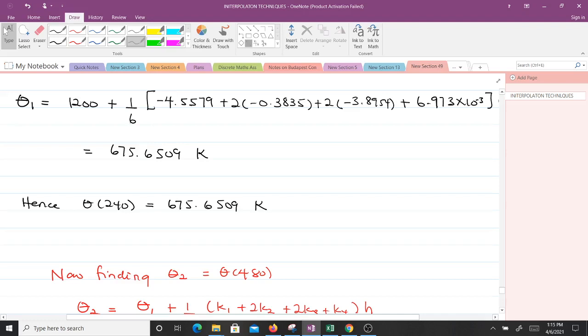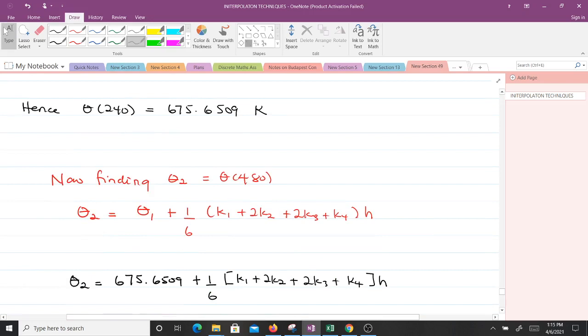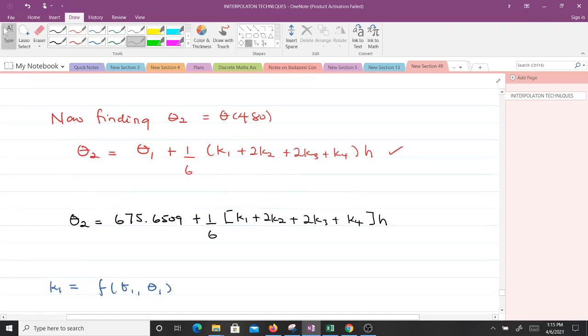Now we have to find theta 2, which corresponds to theta 480 seconds. Theta 2 is given to be theta 1 plus 1 over 6, whatever we have here. When we make substitutions, we know theta 1 is 675.6509 Kelvin. We have to find K1, K2, K3, and K4, since we know our step size H is 240.